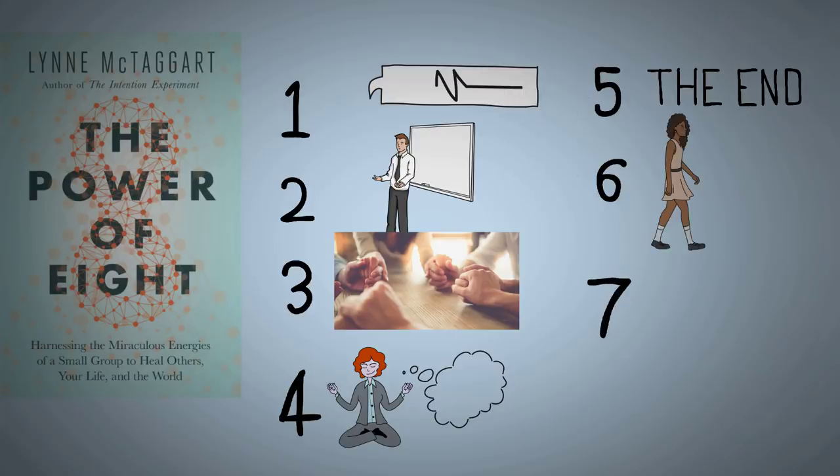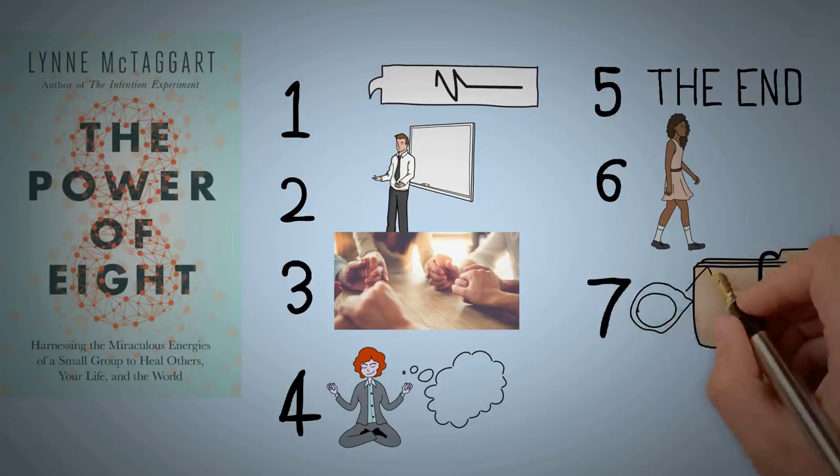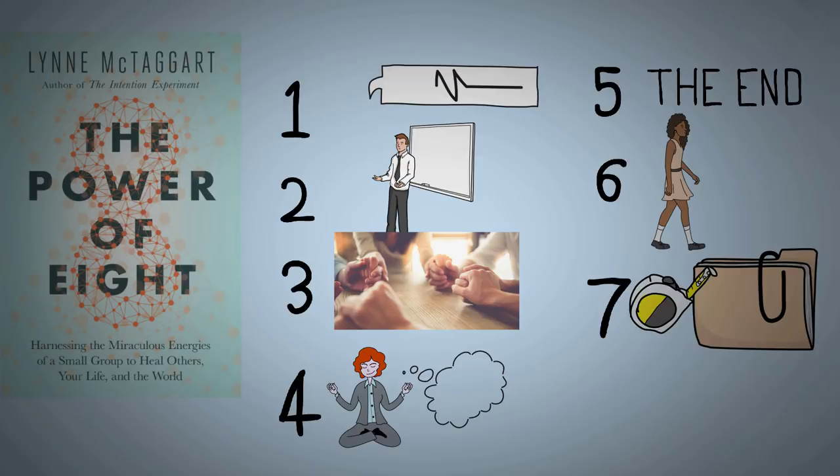And finally, number seven, keep careful note of any monthly progress in your life, your health, your relationships, your career, your life's purpose and focus, because this is how we can measure the power of the group intention on the target and on our own lives.